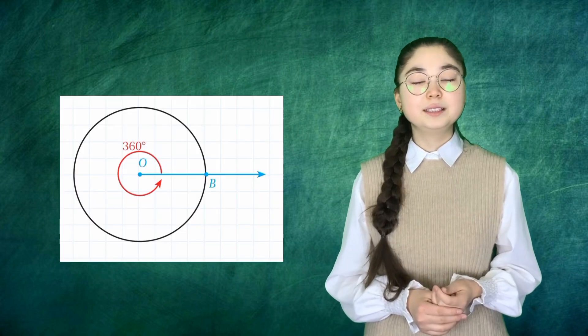When the circumference of the circle is divided into 360 equal parts, the central angle corresponding to one of these arcs is called 1 degree. Thus, the measure of a complete angle is 360 multiply 1 degree, which equals 360 degrees.